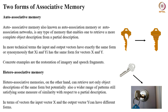There are two forms of associative memory. The first is called auto-associative memory — also called auto-association networks. This is any type of memory that enables one to retrieve a more complete object description from a partial description. In more technical terms, the input and output vectors have the same form, i.e., X and Y have the same vector form. As shown in the example, we have a partial description of a particular object with missing details or noise, but we can retrieve the full description or full picture of that object.